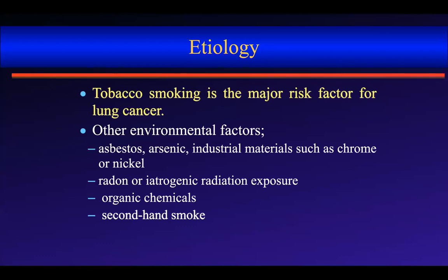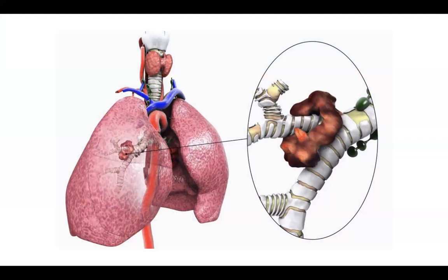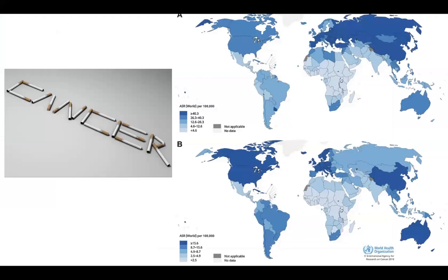Tobacco smoking is the major risk factor, but there are other environmental factors including asbestos, arsenic, industrial materials, radon, second-hand smoking, and genetic predisposition — though these comprise a small number of patients. This is why it used to be called bronchus cancer, because the tumor arises from or in the bronchus. The incidence of lung cancer in the world is very low in sub-Saharan Africa because tobacco came from America and Africans have not been smoking for hundreds of years.